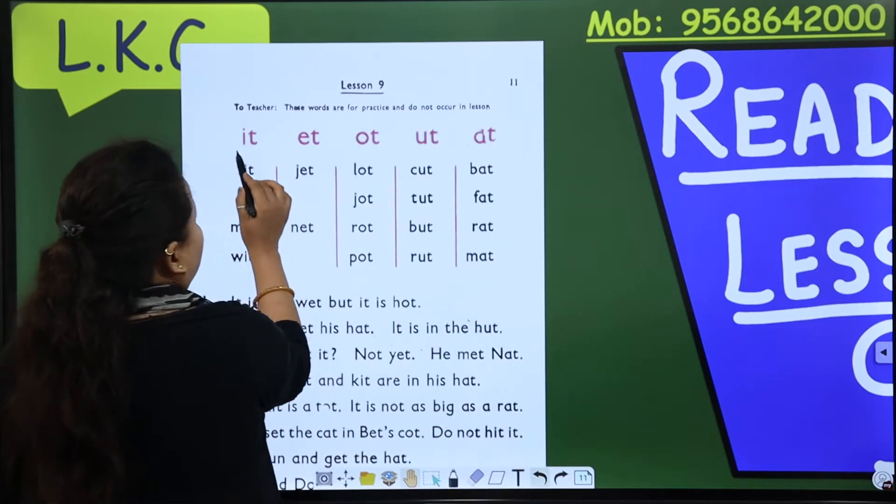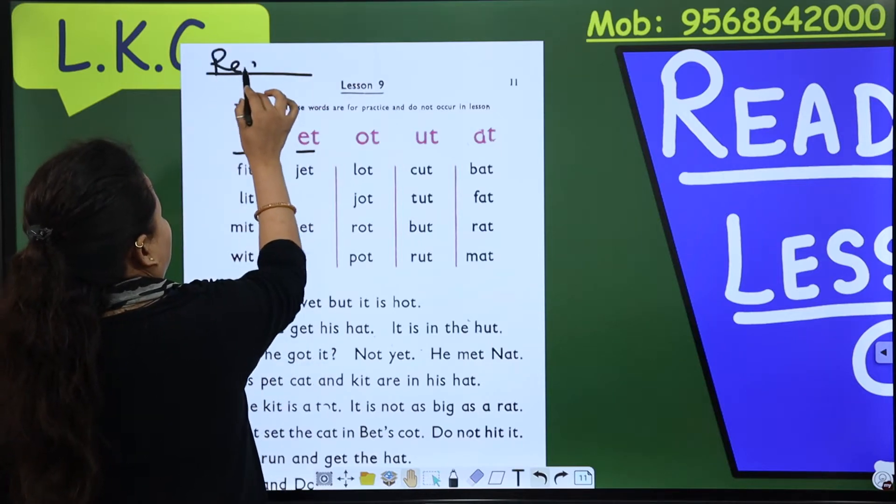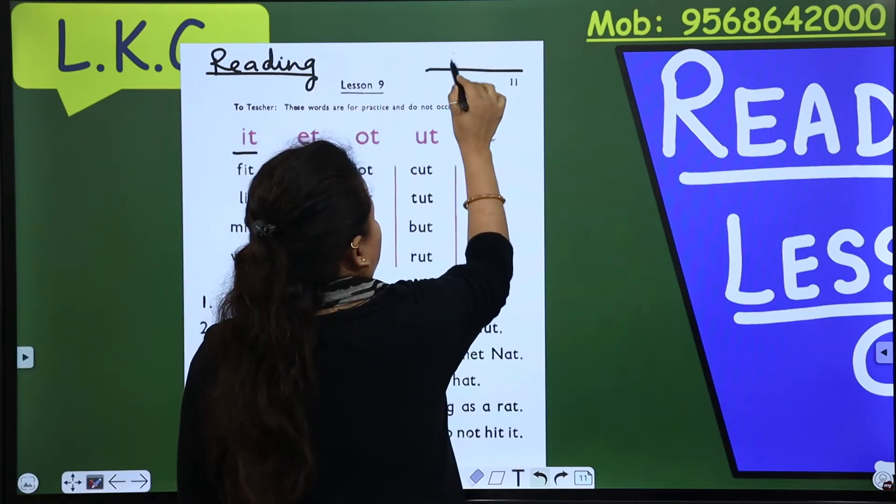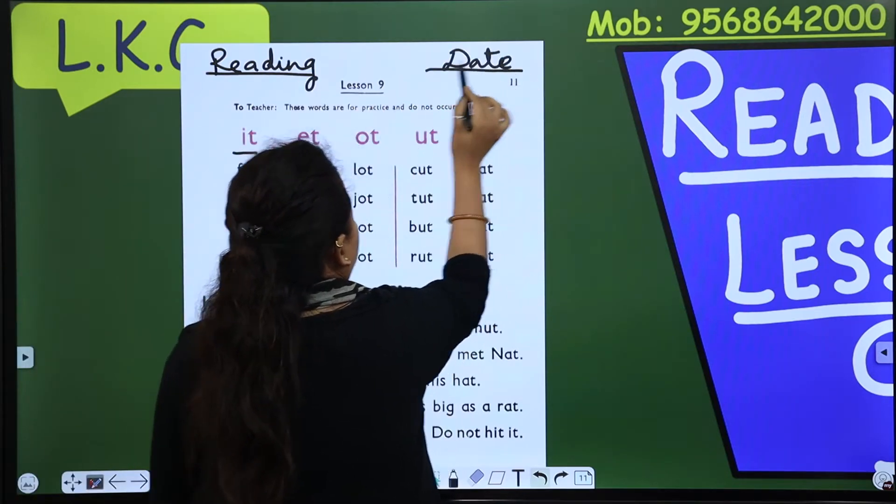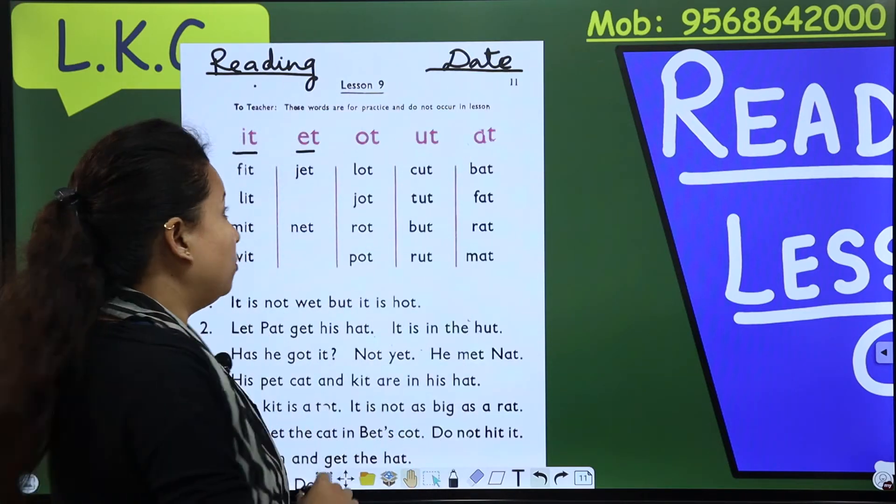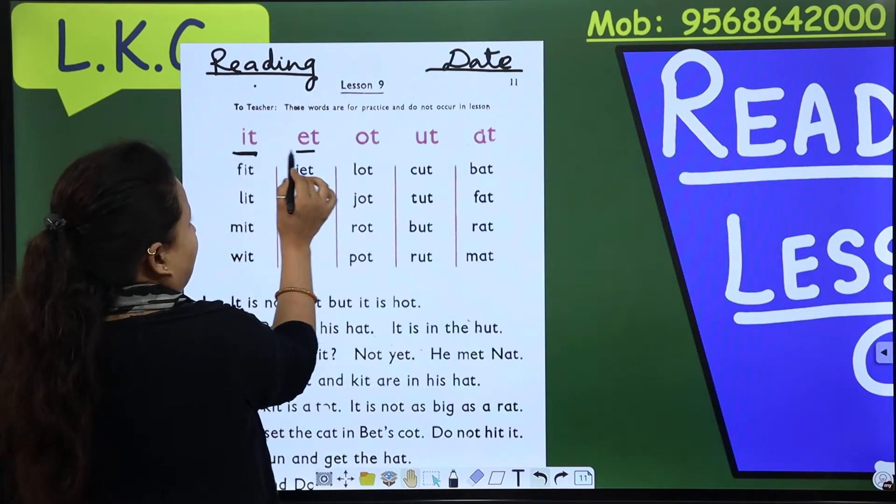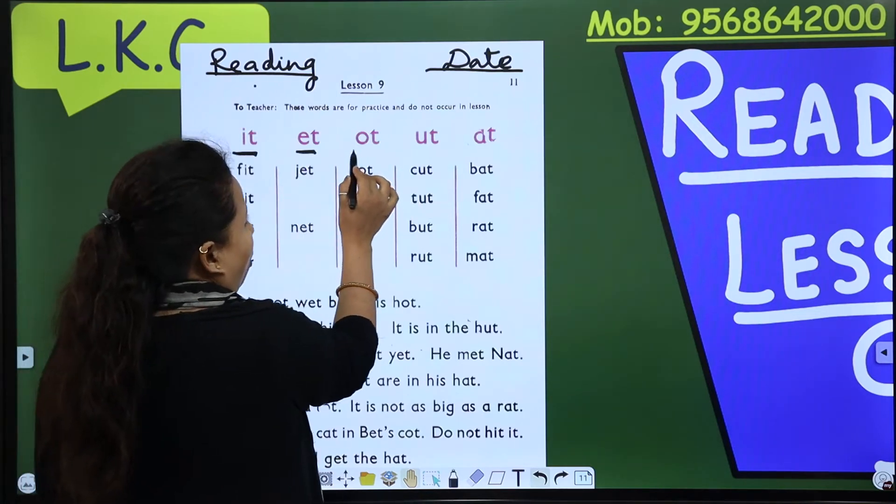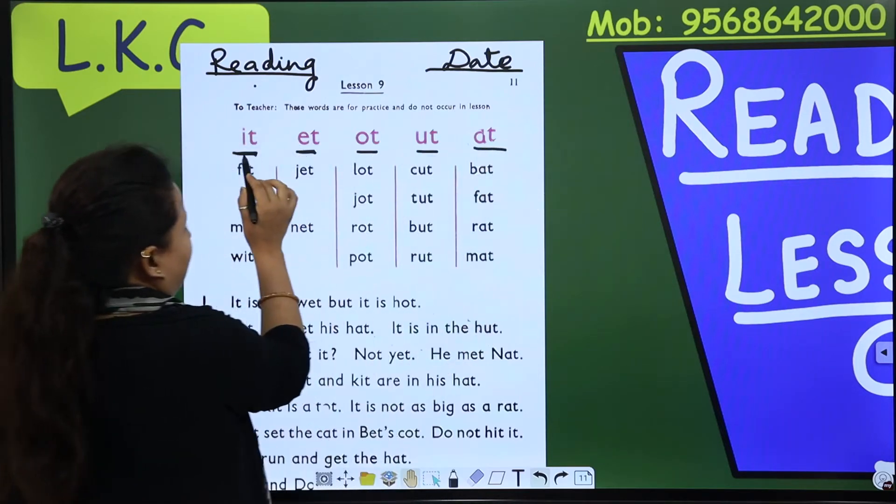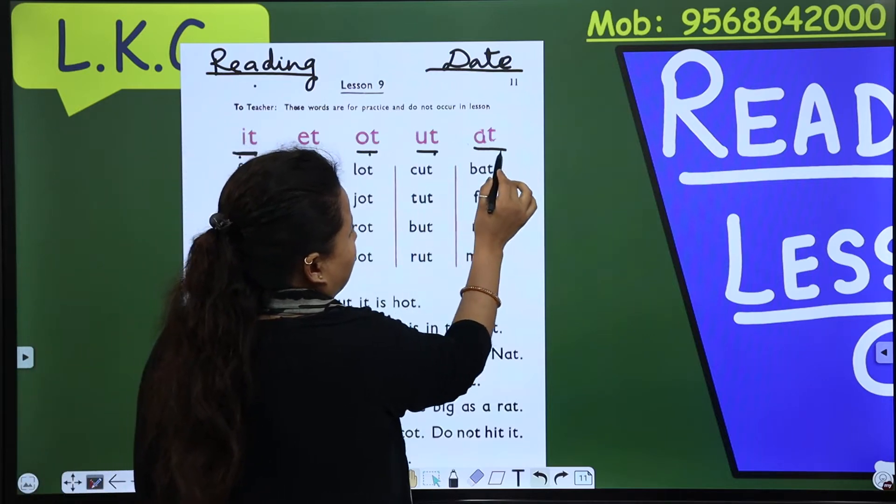So here are two letter words. First of all your mama will write reading and date. These two are very compulsory for you. Okay. Now these are two letter words. It, et, ot, ut, at. It, et, ot, ut, at.